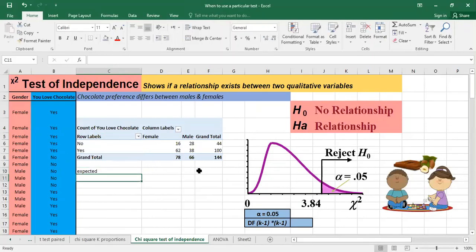So the expected and I have to put the same in the rows, no and yes. And in the columns, female and male. And here we're having the grand total.